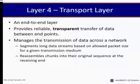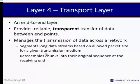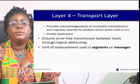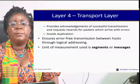Layer 4 is the transport layer — an end-to-end layer that provides reliable, transparent transfer of data between endpoints. It manages the transmission of data across a network, segments long data streams based on allowed packet size for a given transmission medium, and re-assembles chunks into their original sequence at the receiving end. It provides acknowledgment of successful transmissions, requests retransmission for packets arriving with errors, avoids duplication, and ensures error-free transmission between hosts. The unit of measurement is segments or messages.